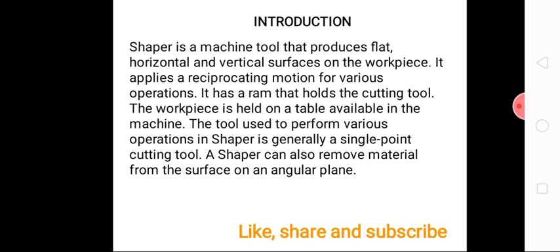The ram reciprocates horizontally — one forward stroke and one return stroke. In the forward stroke, the cutting action takes place. In the return stroke, there is no cutting action on the workpiece. From the ram, the tool post is connected, and on the tool post the tool is situated.